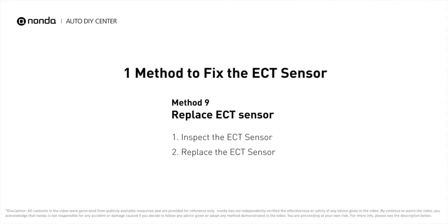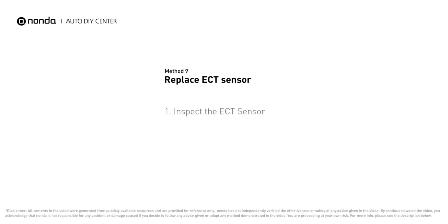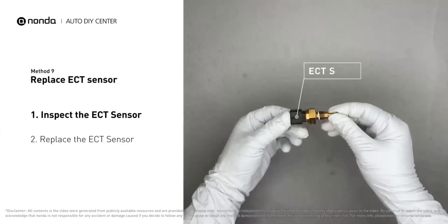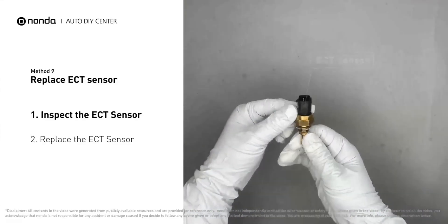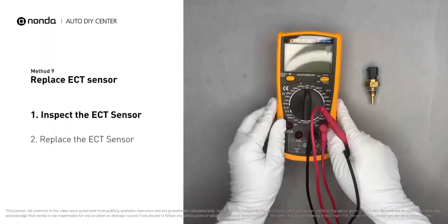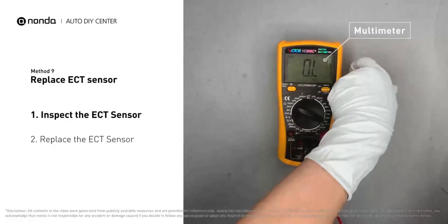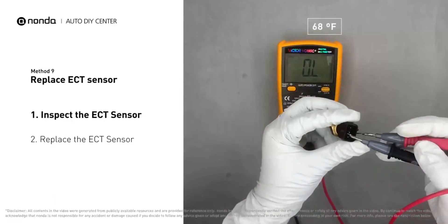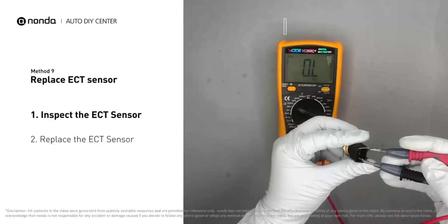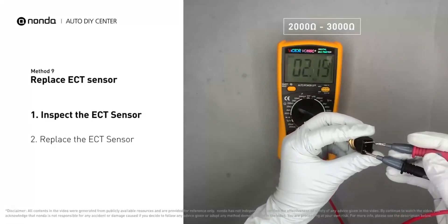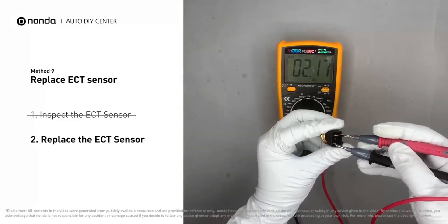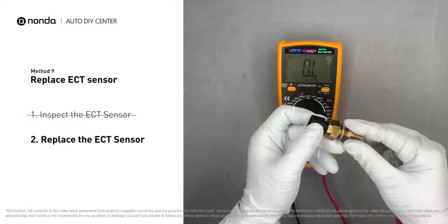Here is one method to fix the ECT sensor. Method nine: replace the ECT sensor. Remove the ECT sensor from the engine and use a multimeter to test it. At an ambient temperature of 68 degrees Fahrenheit, the sensor resistance should be between 2000 ohms to 3000 ohms. If you do not get a reading in that range, this indicates the ECT sensor is faulty and needs to be replaced.